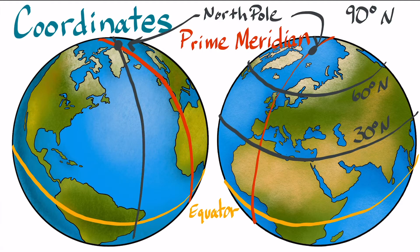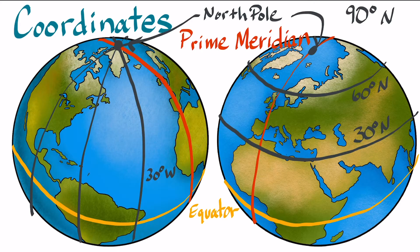If you start at the prime meridian and go east or west from there, it works the same way. This is 30 degrees west, this is 60 degrees west, and now 90 degrees west.